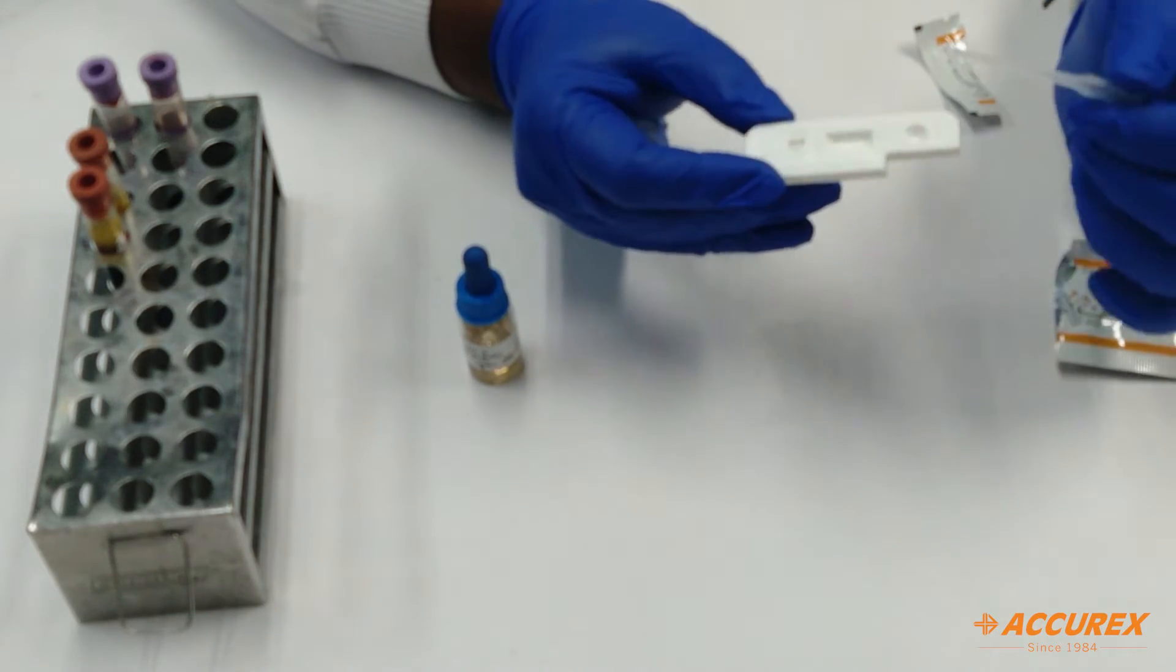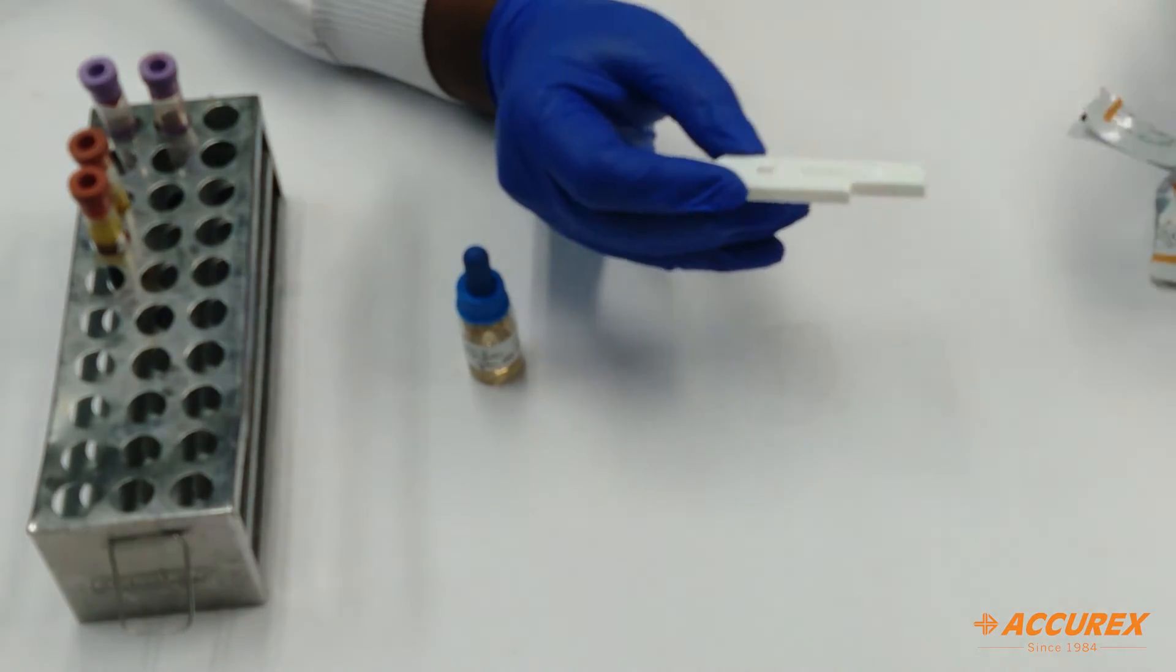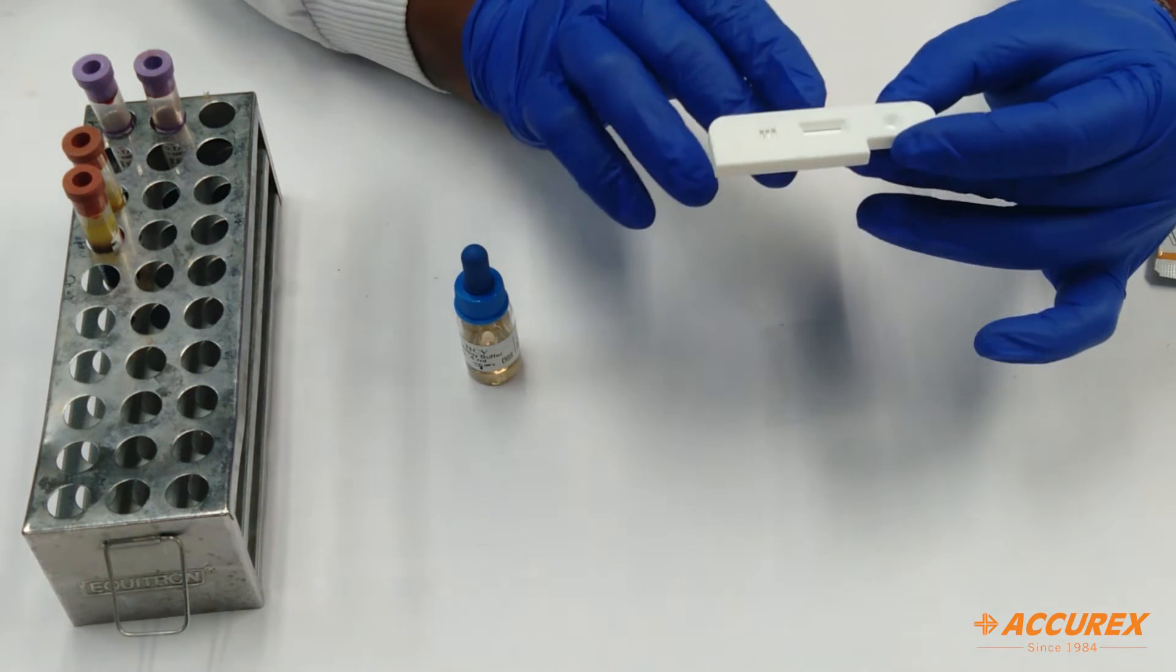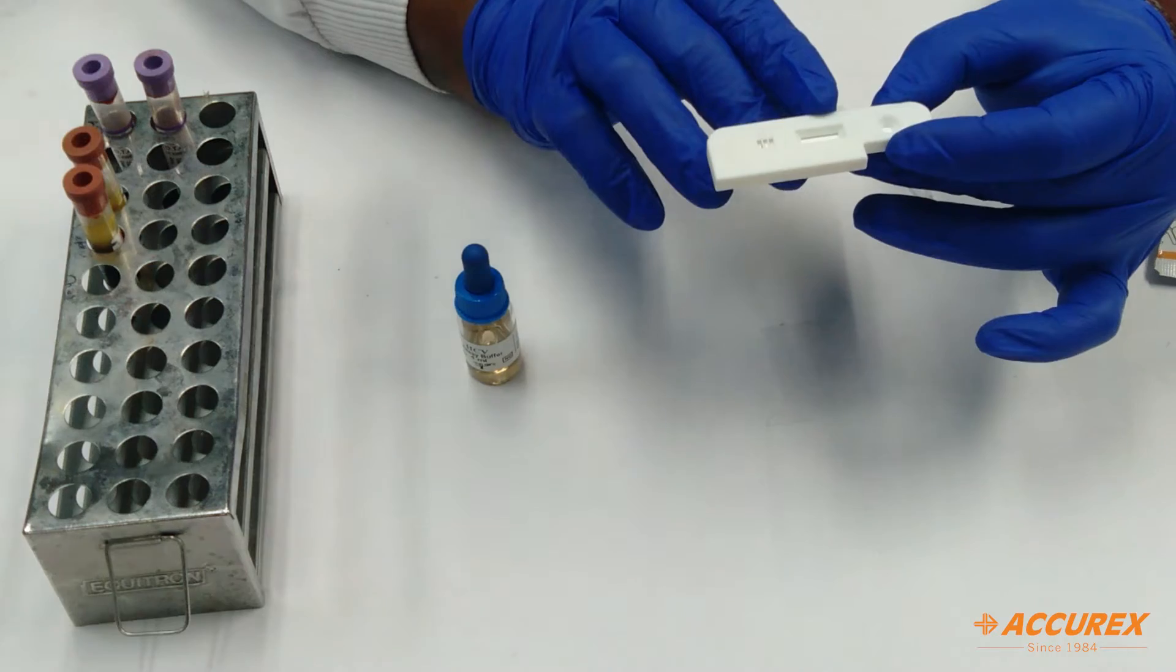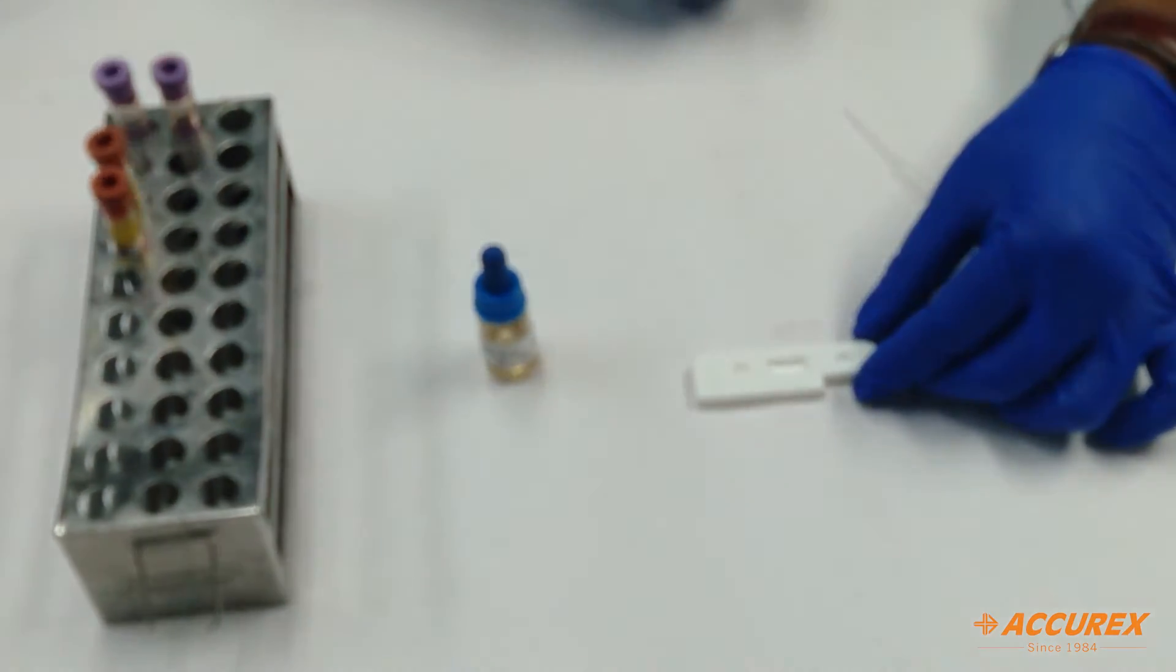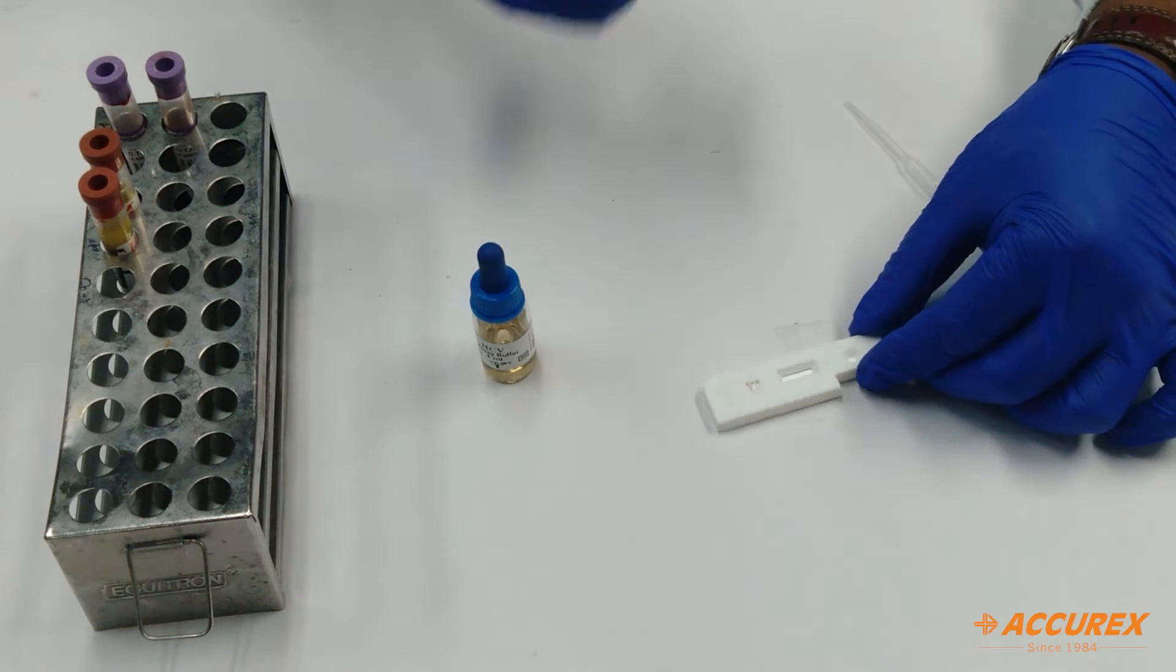On the test card you can see there are two holes. One is for the sample and buffer, the second window is for test results. One side is the test line, the other is the control line. Before testing, you need to write the name of the patient on the card.